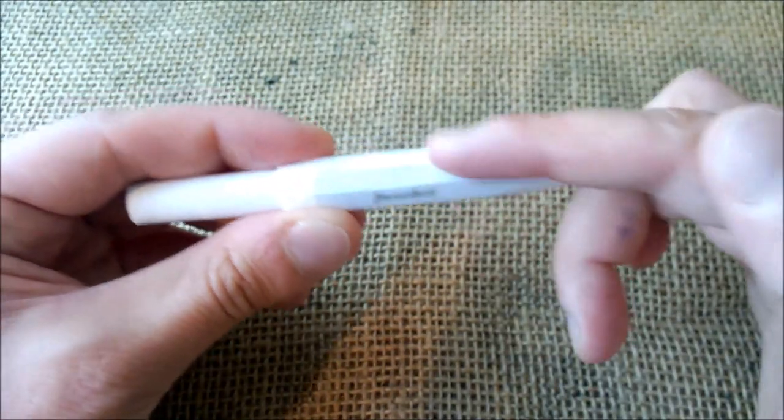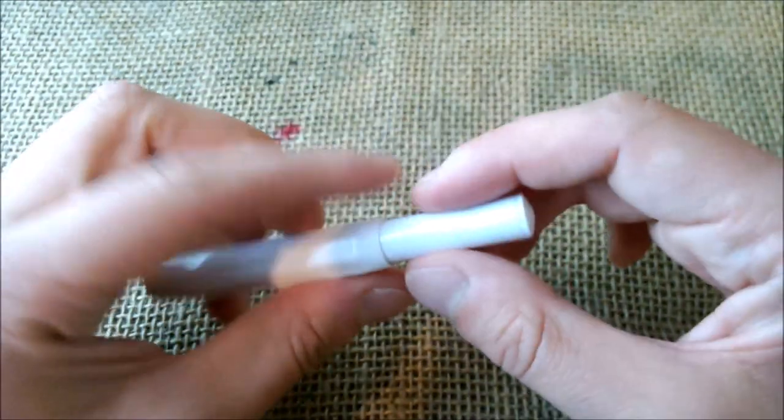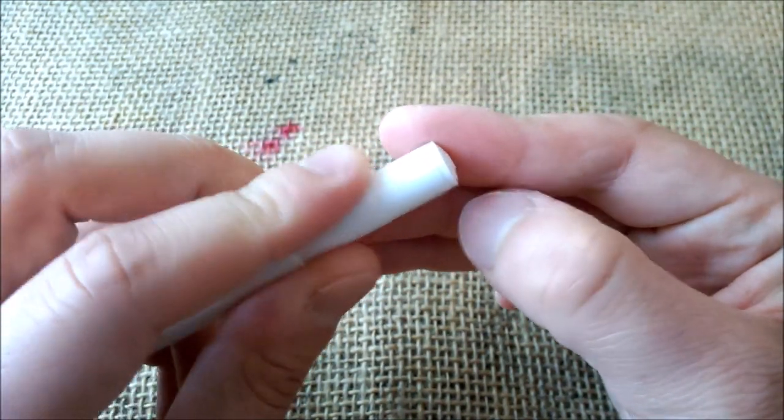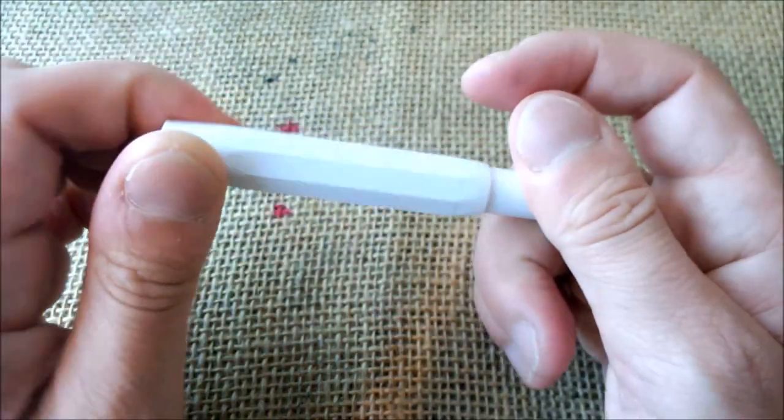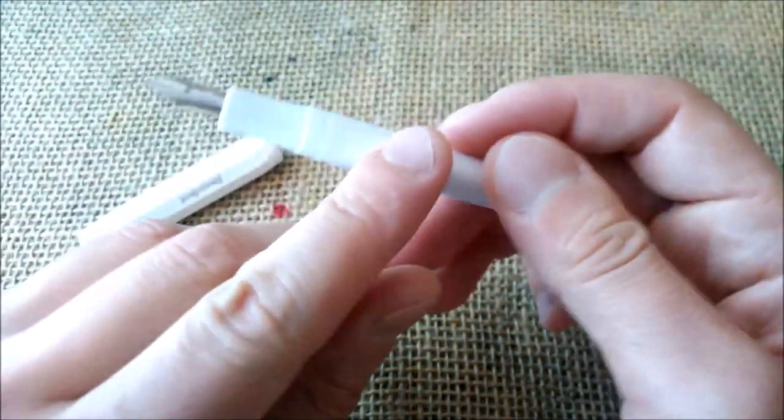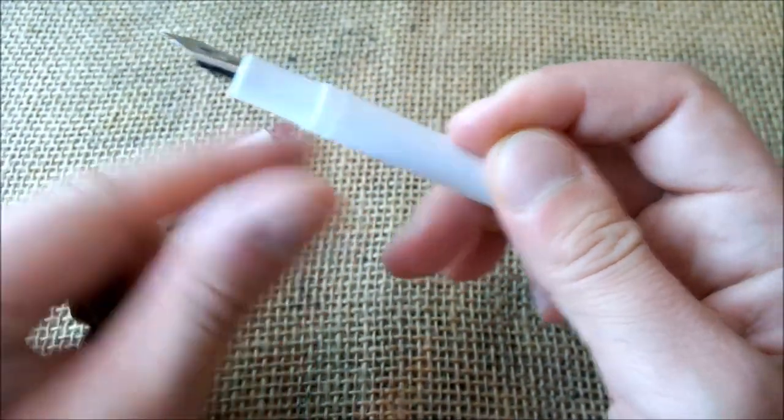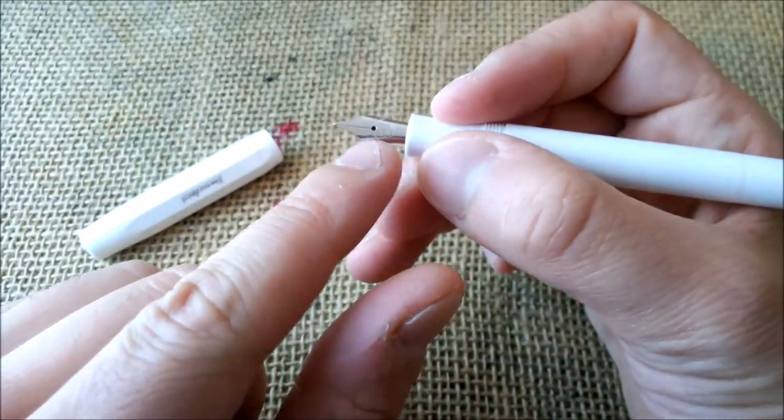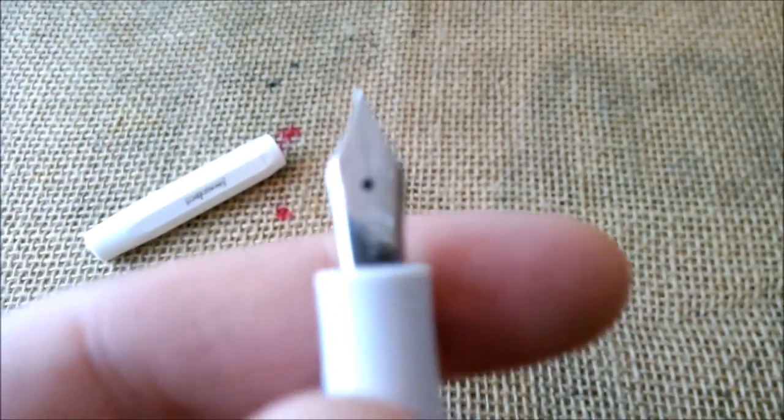It has the Kaweco logo on top of the cap. The cap has eight facets and the barrel is cylindrical. It has this knurled part on the end, it says made in Germany on the bottom. When you unscrew you have a very slightly hour-shaped section, quite small, and a nib that has the Kaweco logo.